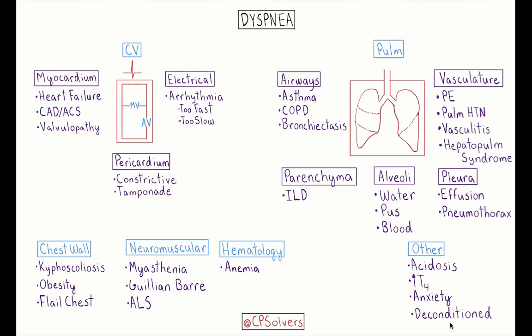Dyspnea is the subjective sensation of uncomfortable breathing, and it commonly results from problems in the cardiovascular and pulmonary systems. Before we get into this schema, I'd like to make two quick points. The first point is that the cause of dyspnea can often be readily identified just with a careful history and physical — how a patient describes their breathing discomfort can often give us insight into the underlying pathophysiology. The second point is that dyspnea often has multiple etiologies, and it's not uncommon for a patient to have more than one problem contributing to their breathing discomfort.